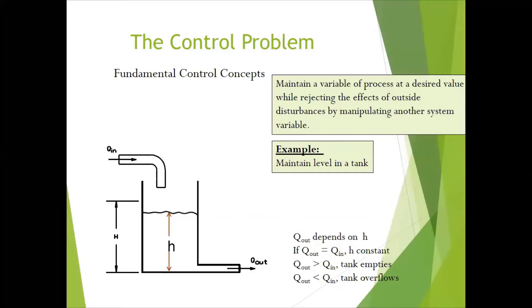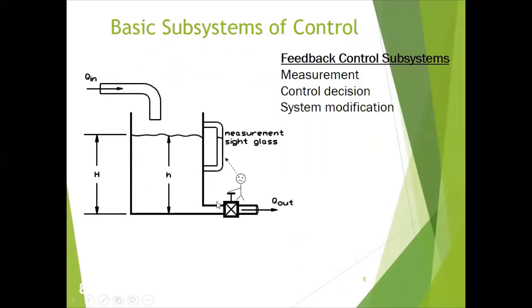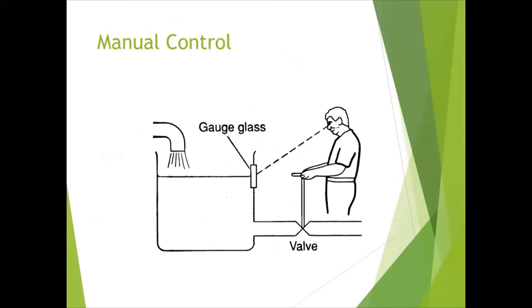Let us look more deeply into the problem. When we have some specifications or control devices, the same system looks different but with some additional subsystems — like a measuring instrument and a controlling device. The system is modified now: we have a measurement sight glass and a valve to control the output of the system. When we have these additional devices, control is easier — you can adjust the valve position according to the requirement. This control problem is reduced to a certain level.